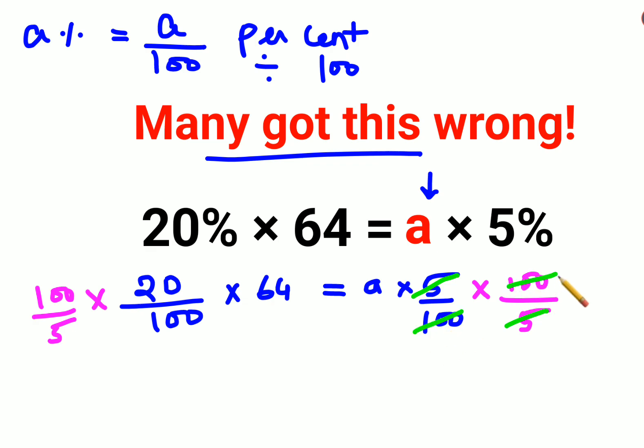So this gets cancelled. This also gets cancelled. And here also the zeros are cancelling. This is ones and fours.